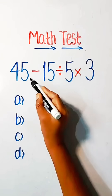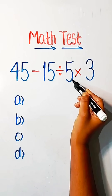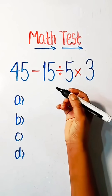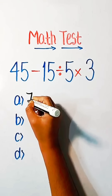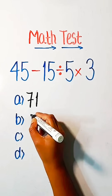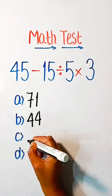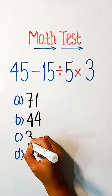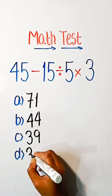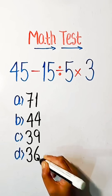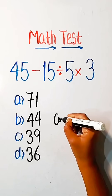Math test: 45 minus 15 divided by 5 into 3 equals what? Option A: 71, Option B: 44, Option C: 39, Option D: 36. Comment your answer.